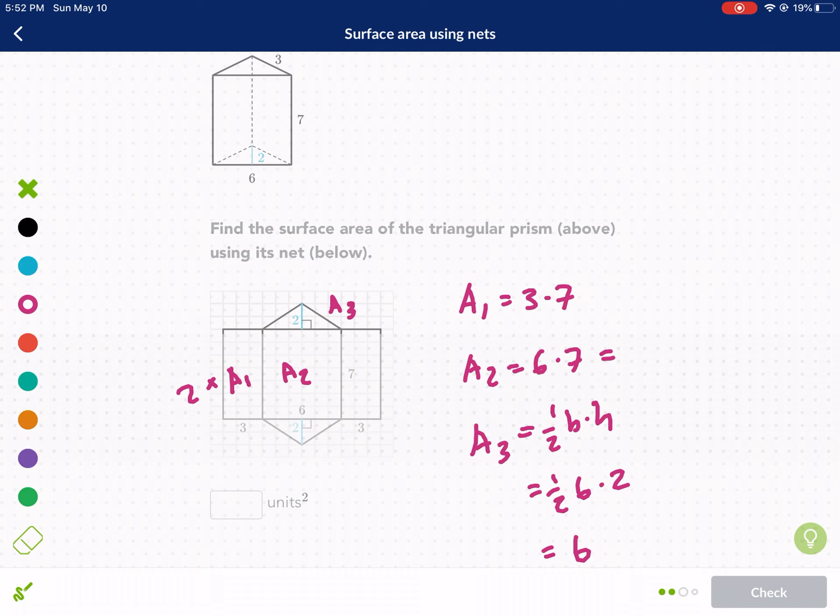This gives us an area of 42. And then we have to do times two for the A3, the triangle. Times that by two, we get 12. Area of the second one, A2, we leave that alone, 42. And then A1 is 21. But we need to times that by two because there's two of them. And that equals 42. So now we have 42 plus 42, which is 42 times two, plus 12. And we get 96.